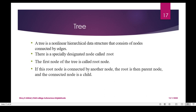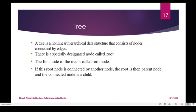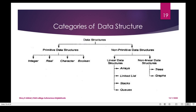A tree is a non-linear data structure that consists of nodes connected by edges. Here is the idea of a family tree. There is a root node at the top, which is the starting node. Below root are parent nodes and child nodes, and at the bottom are leaf nodes — also called internal nodes.